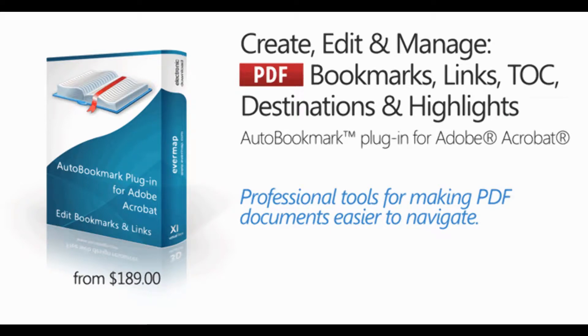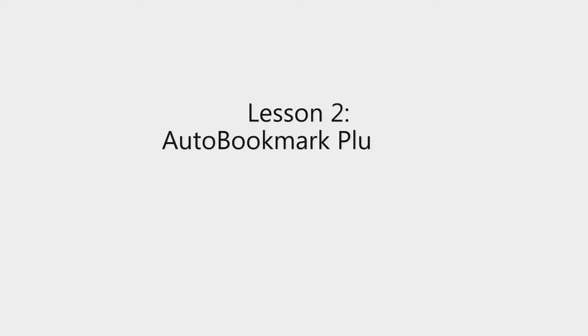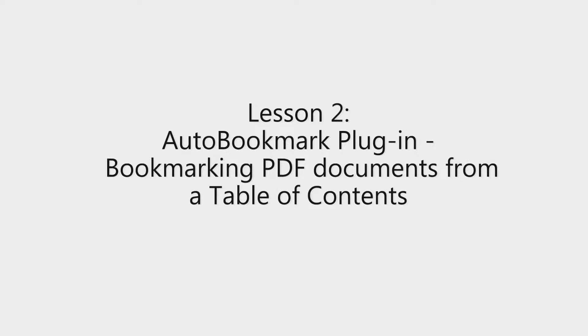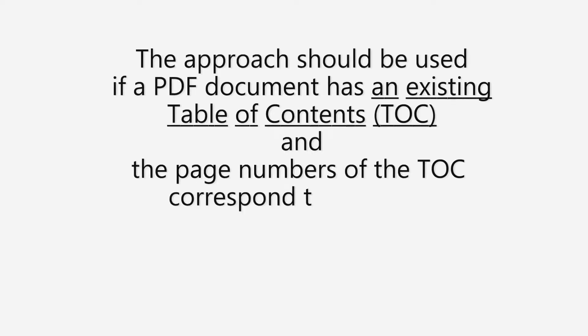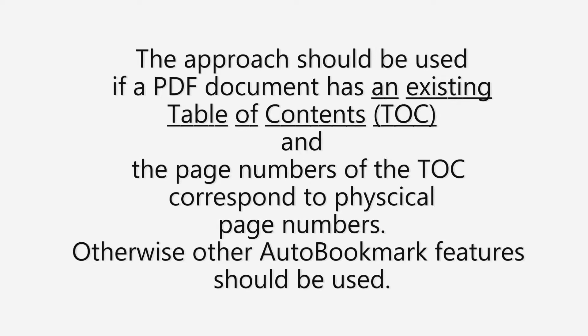In this video, we're going to look at bookmarking PDF documents from a table of contents when using the Auto Bookmark plugin. This function can be used on a PDF document when it has an existing table of contents containing page numbers that correspond to physical pages. If not, there are other Auto Bookmark features that can be used.